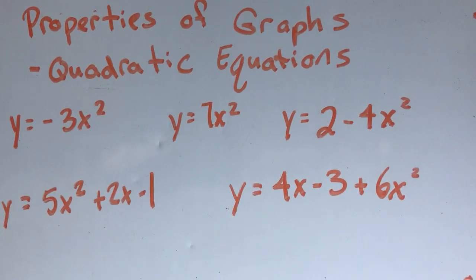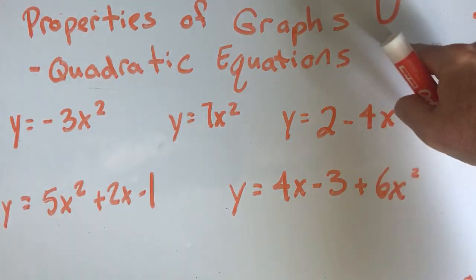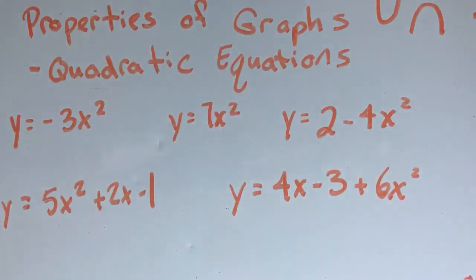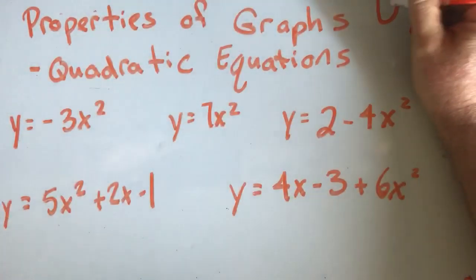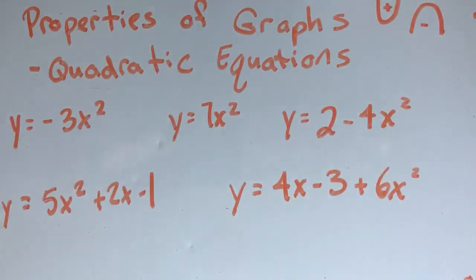So the way we do this is we are actually going to determine if the graph opens upward. A graph that would open upward would be one that looks something like this, or one that opens downward would look something like this. So if it is positive, it opens up. If it is negative, it opens down.